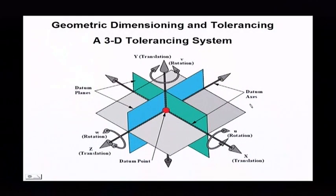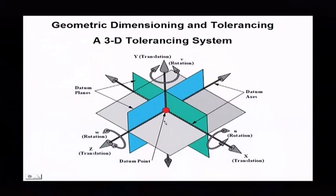We want to remind you that this is a 3D tolerancing system — we're actually tolerancing in three dimensions. It represents a coordinate system, and we want to tolerance from a coordinate system using your X, Y, and Z planes.